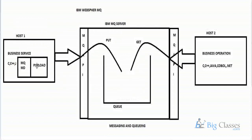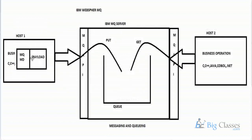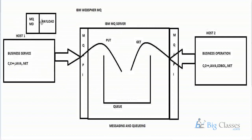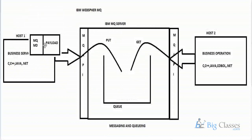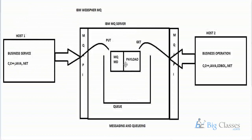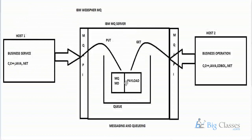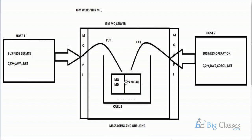Whenever a business application needs to send business data to a remote service on IBM MQ server, first it defines the data as a message — that is the messaging mechanism. Then it sends the message on IBM MQ server. The Q object is used to hold business data until it is processed by the remote service.